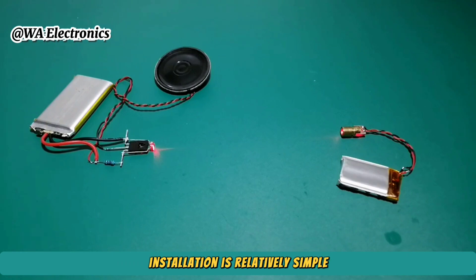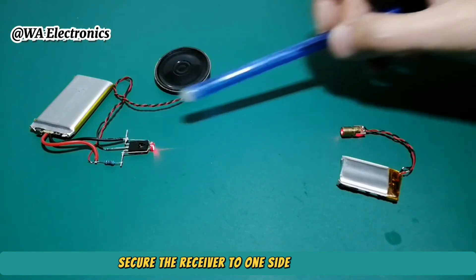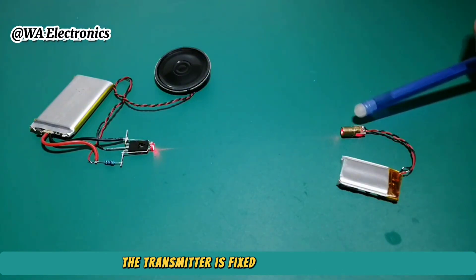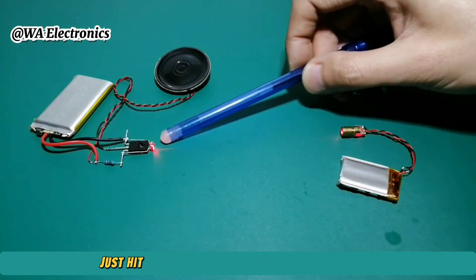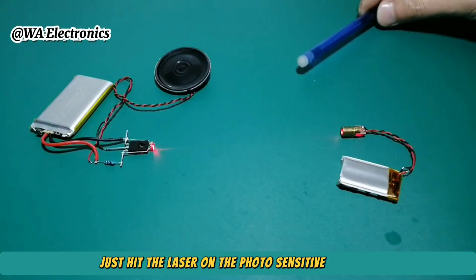Installation is relatively simple. Secure the receiver to one side of the door. The transmitter is fixed on the other side. Just hit the laser on the photosensitive resistor.